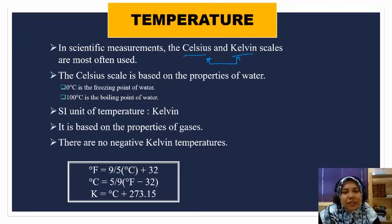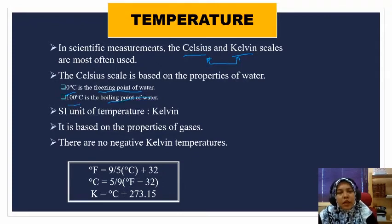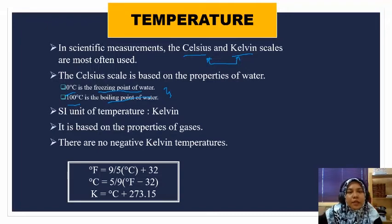The Celsius scale is based on the properties of water. Zero degree Celsius is the freezing point of water, while 100 degree Celsius is the boiling point of water. These two are fixed because they're related to pressure as well. The SI unit for temperature is Kelvin, which is based on the properties of gases.